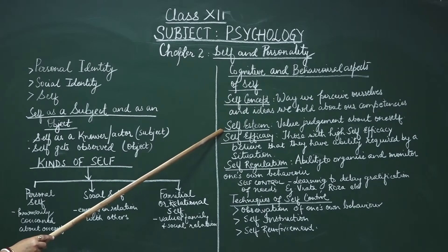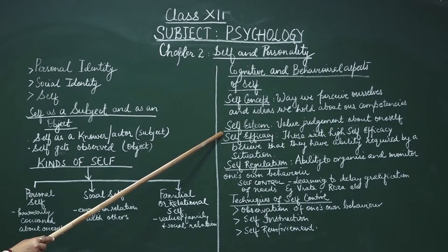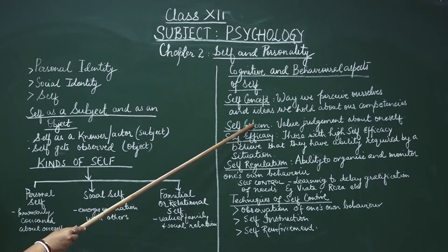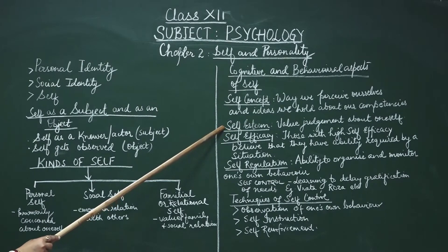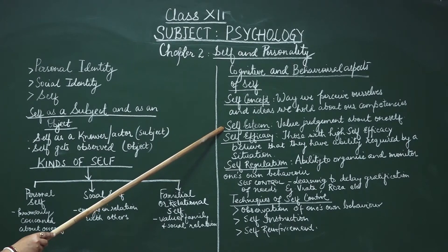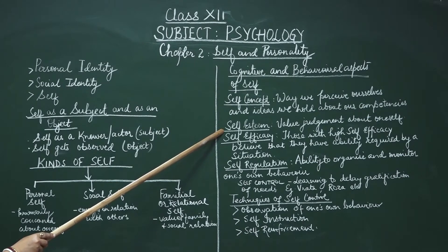The cognitive aspects of self involve self-esteem. We always make some judgment about our values or worthiness, and this value judgment about oneself is called self-esteem. It is said that children between the age group of 7 to 11 years develop self-esteem in four areas: academic, social, physical/athletic, and physical appearance.